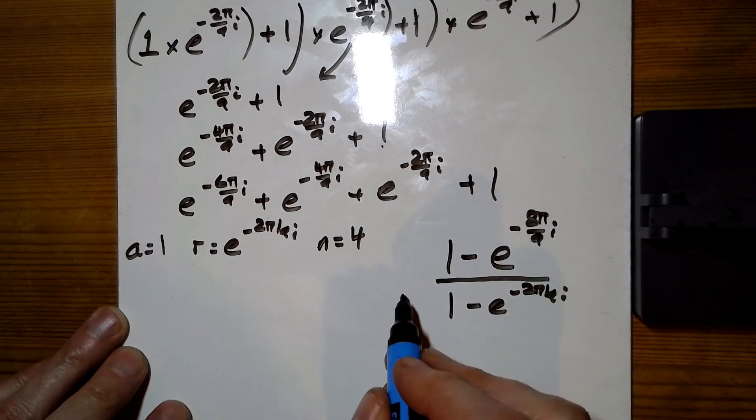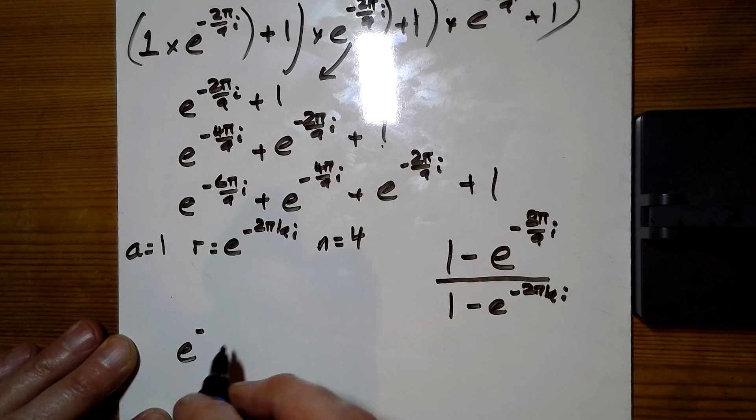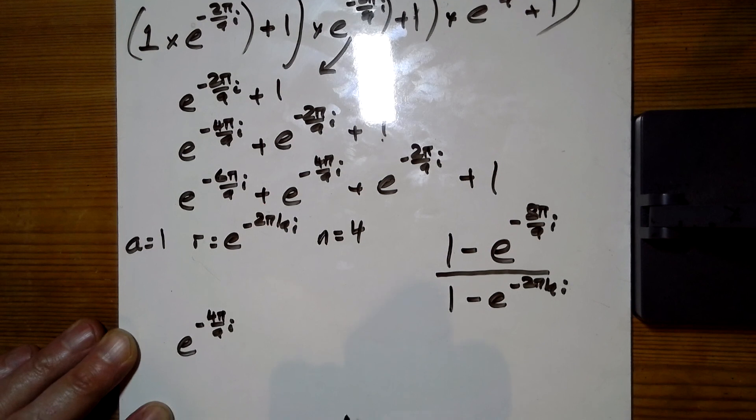So this is what we're looking for. And the trick that we had before was we're going to take out half of them. So e to the minus 4pi over 9i, taking those out as a factor.